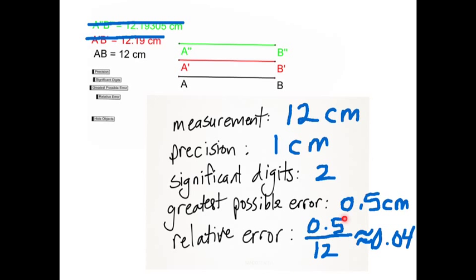Greatest possible error is a half of centimeters, because if it were 0.6, let's say it's 12.6, it would be rounded up to 13. So that's why we use 0.5 centimeters there.